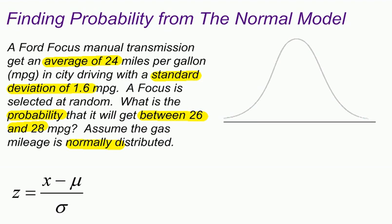So let me draw some things on my normal curve over here. I know that the average is always in the center, and in this case that's 24 miles per gallon. I want to know what is the probability. Let me write this up here. What is the probability that my random variable x is between 26 and 28? So that's the probability that I'm looking for. Let me draw that on my graph as well.